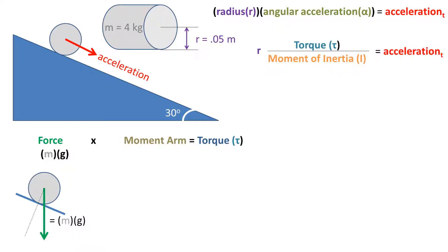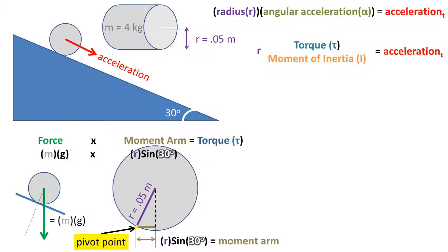Now, where is the pivot point? Well, if you were to say the center, you'd be incorrect. It is actually the point of contact of the cylinder and the ramp. The perpendicular distance from our force to the point of contact on the ramp is the moment arm. We can solve the right triangle using SOHCAHTOA, and we get a moment arm of radius times the sine of the ramp angle of 30 degrees.